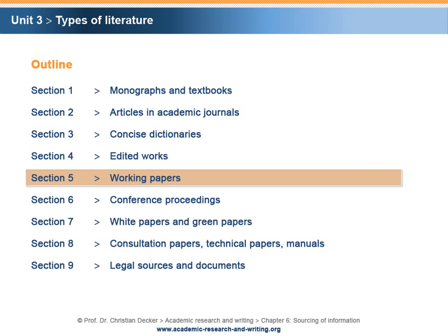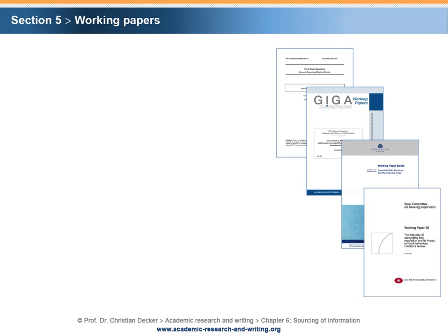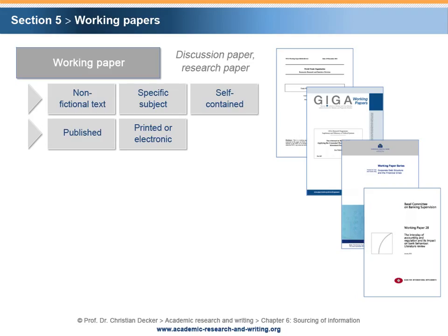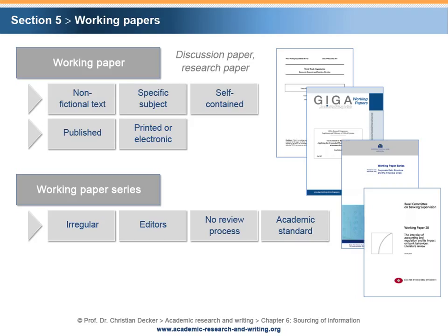Section 5: Working Papers. A working paper is a non-fictional text that deals with a specific subject and is self-contained. Working papers are published in print or in electronic format. Other names for a working paper are a discussion paper or a research paper. Working papers can be published on a stand-alone basis or in a working paper series, with editions appearing on an irregular basis. Editors can be an institution such as a university, an organization, or a group of persons. Although a formal review process does not exist in many cases, compliance with academic standards is expected.